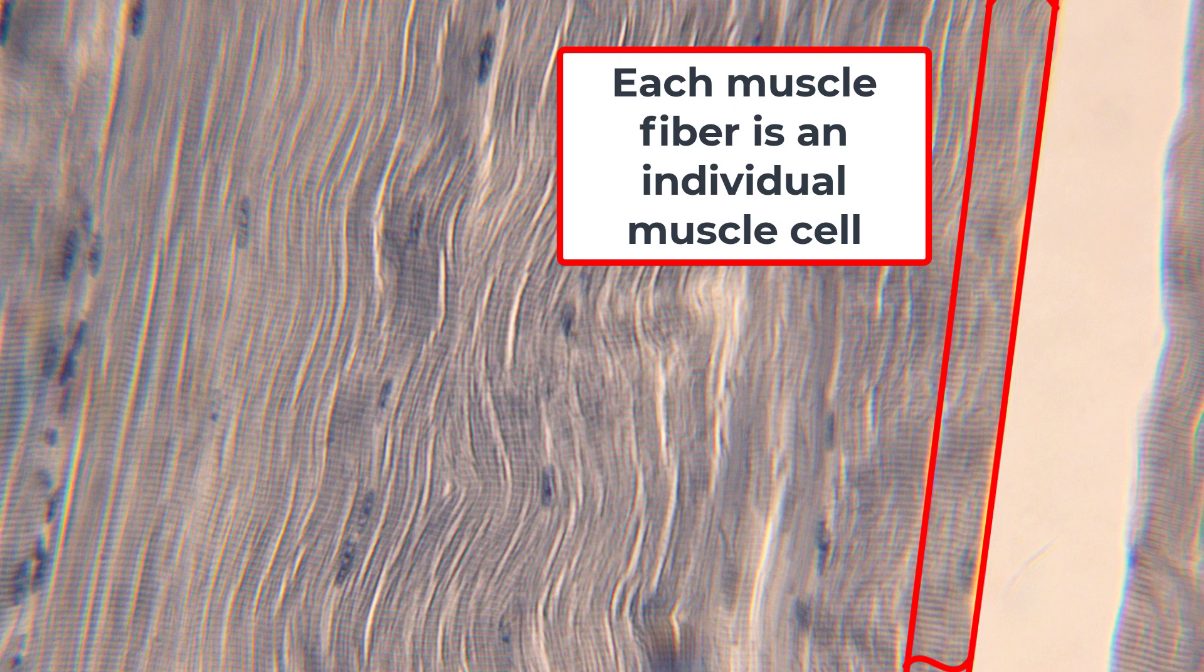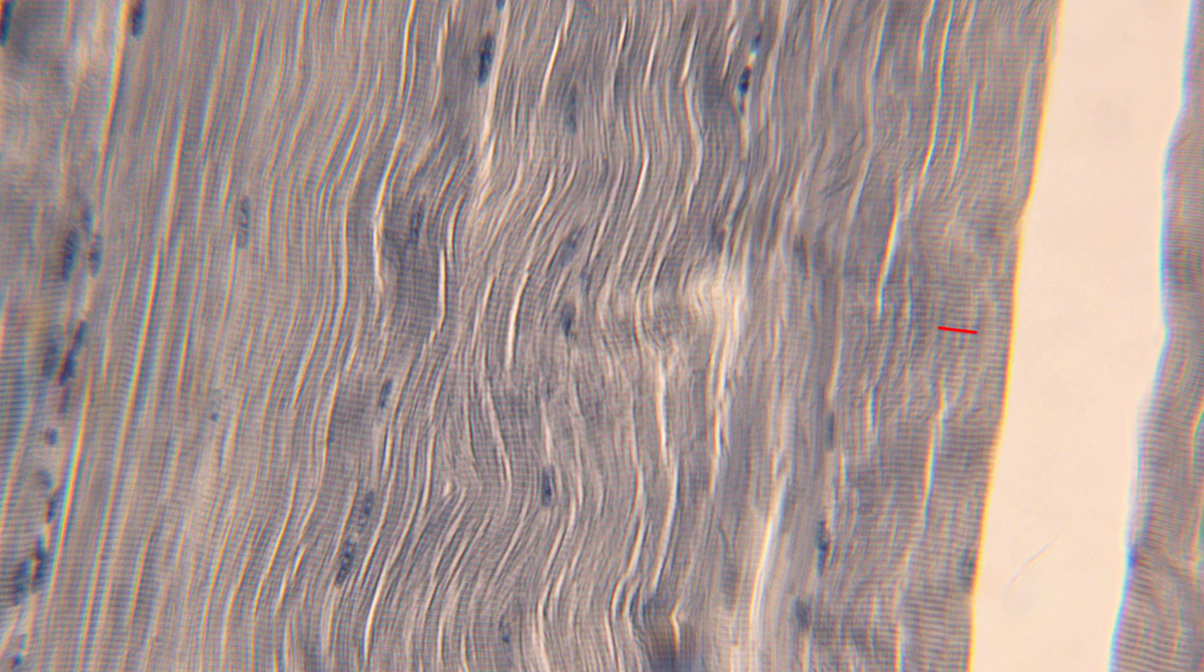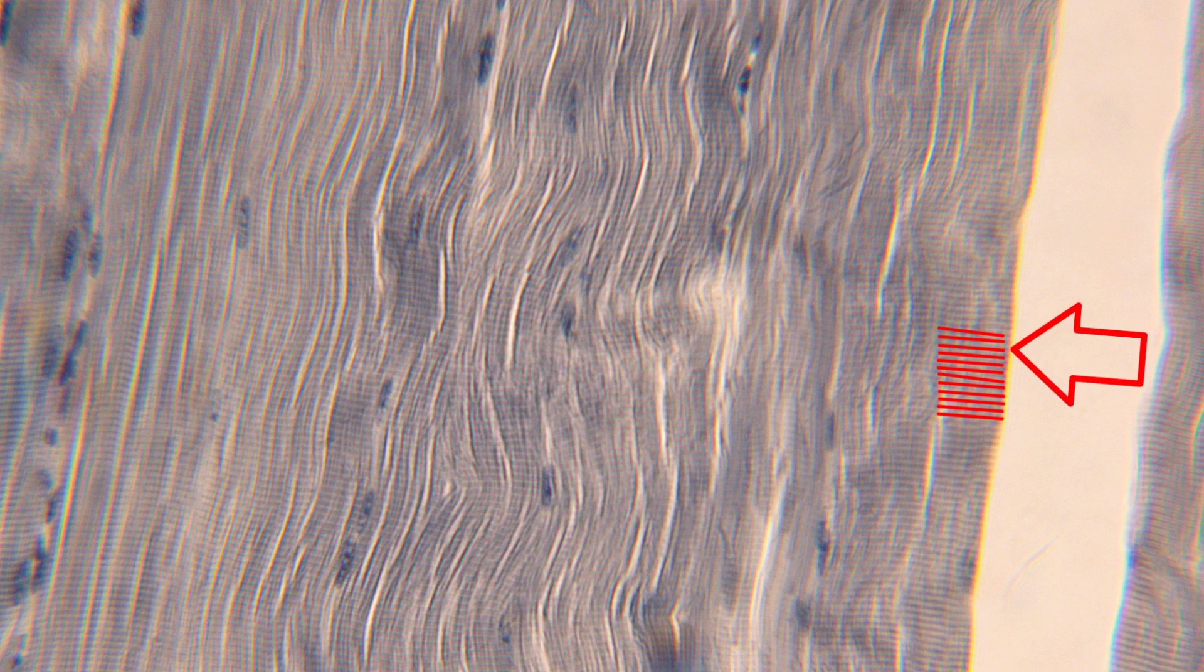We can see that they have a striped appearance, and we call these individual stripes striations. A striation is a stripe. These striations are due to the arrangement of protein filaments, and it's the interaction of these protein filaments that causes the contraction of the muscle.